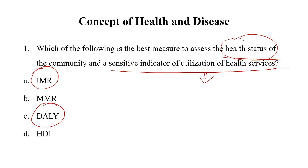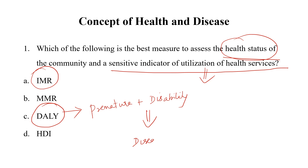Most students have confused this with DALY. DALY stands for Disability Adjusted Life Years — it is a measure of premature death as well as disability, measuring the overall disease burden of the community. So to measure overall disease burden, we use DALY. But the answer to this question about health status of the community is Infant Mortality Rate.